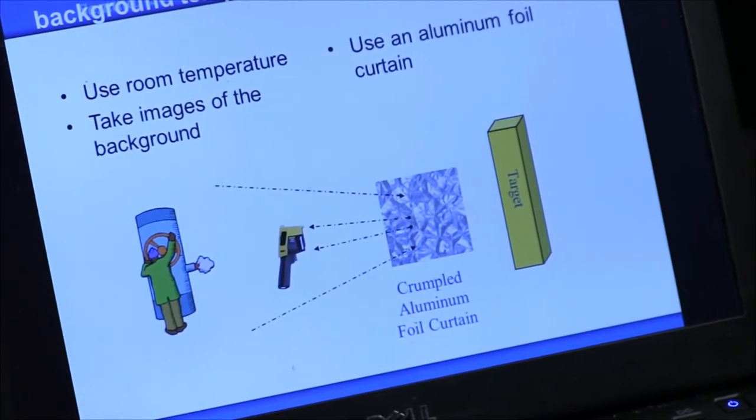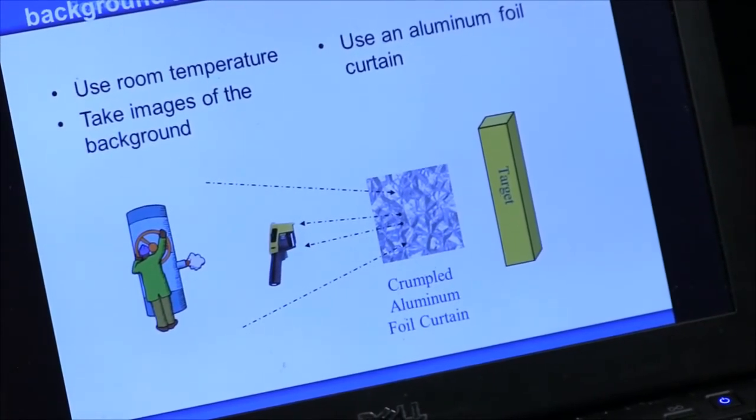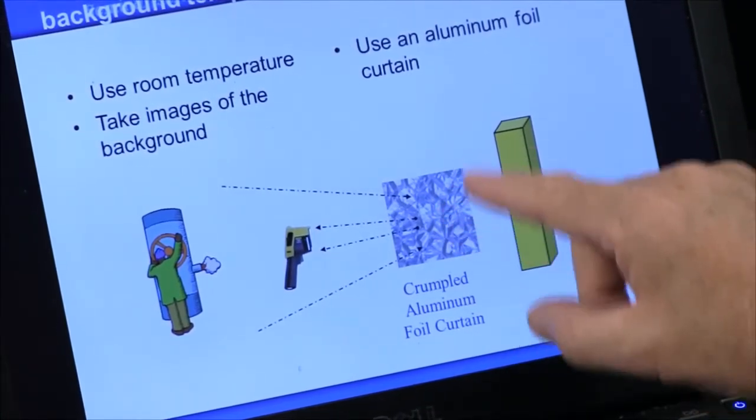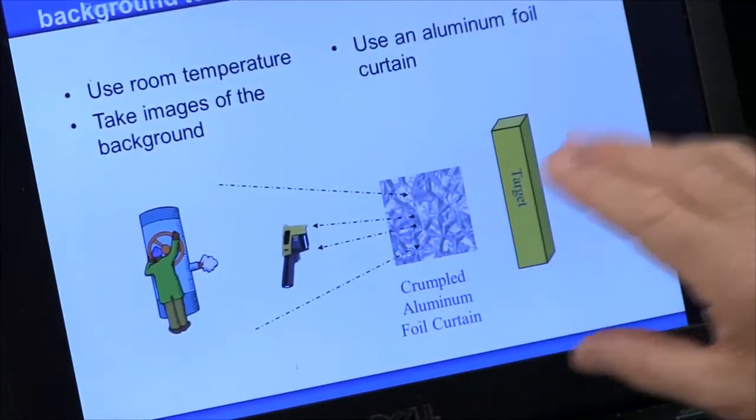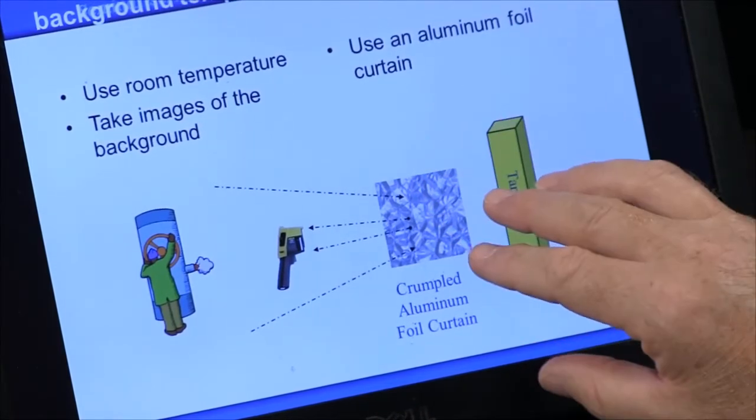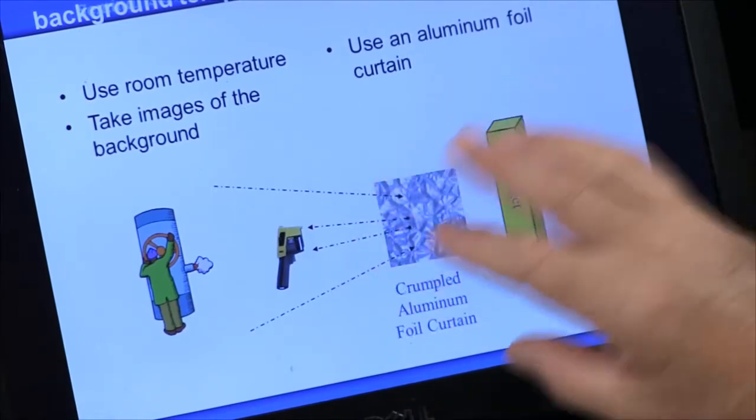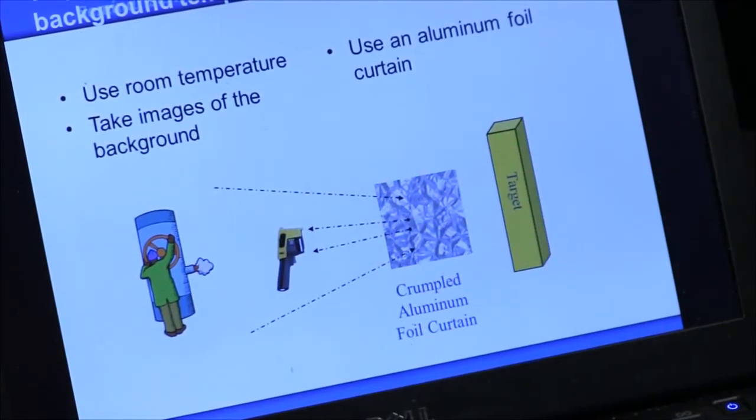The third method is using an old crumpled piece of aluminum foil. What this does is all the temperatures in the room are going to reflect off the little crinkles and you'll be able to see what the background temperature is because they'll all be kind of averaged out when they're reflected off the aluminum foil.